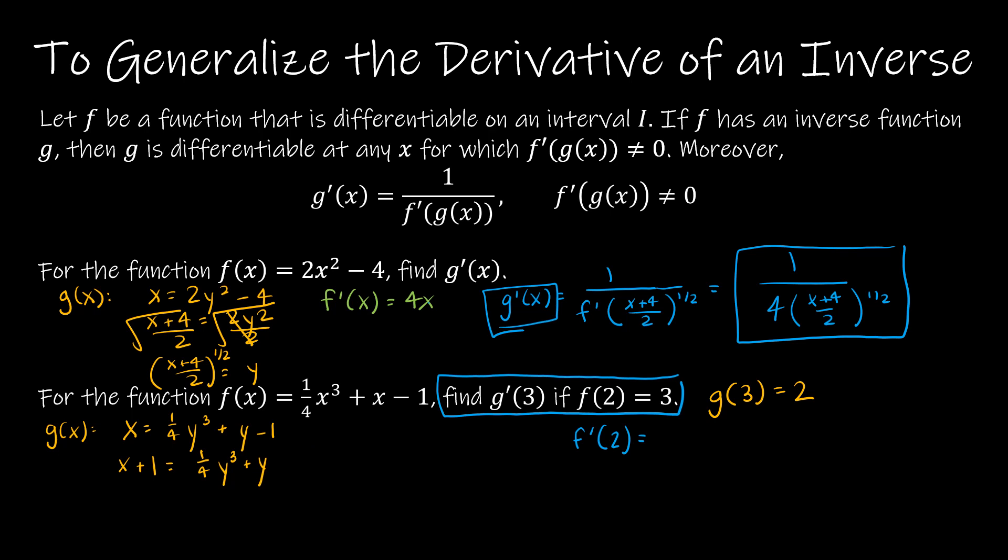Let me keep with the same color scheme. So f prime of x is equal to 3/4 x squared plus 1. Then f prime of 2 is going to be 3/4 times 4. So that's 3 plus 1, which is 4. So why is that helpful? Because if f prime of 2 is 4, what is g prime of 3? Well, remember that relationship we had said it's just the multiplicative inverse of that. So my final solution would be 1/4.